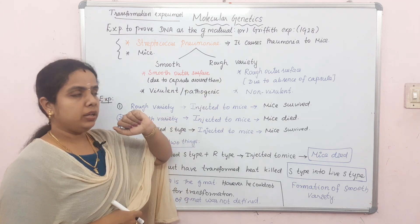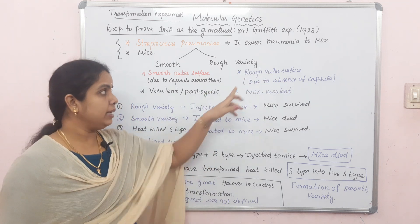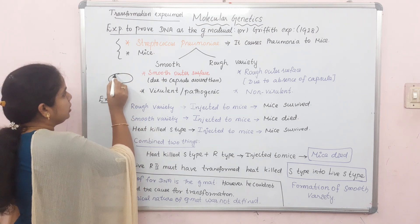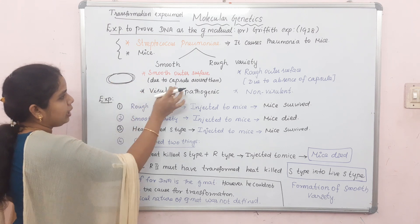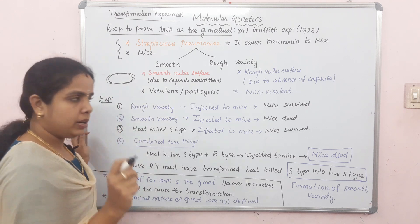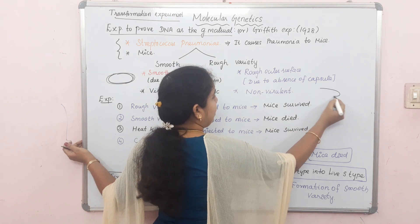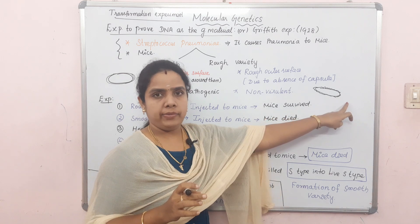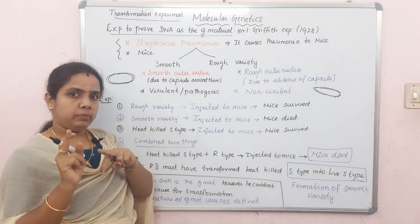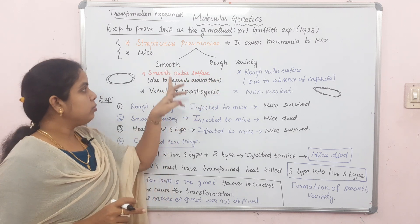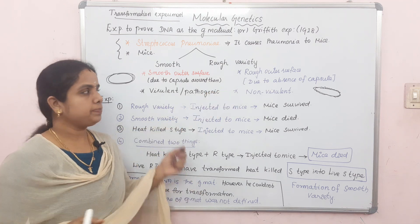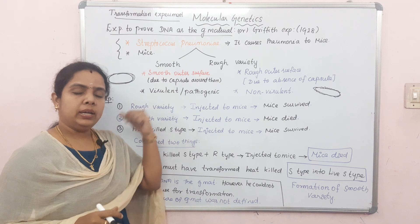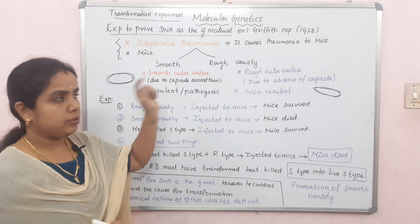The rough variety has a rough outer surface due to the absence of a capsule. When a capsule is present — in smooth variety — the bacteria becomes virulent, meaning pathogenic or disease-causing. It causes pneumonia in mice. The smooth variety is called the virulent type, also written as S-type. The rough variety is called non-virulent or non-pathogenic, meaning it does not cause any pneumonia.